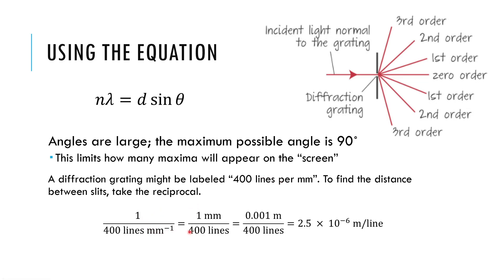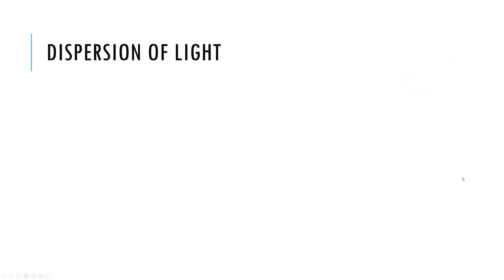And here's a kind of formal factor label way that you could do it with some dimensional analysis. One over 400 lines per millimeter. So I got this many millimeters in 400 lines, convert, convert, convert. And you should find that there's this spacing between each line. In other words, that's the spacing between the slits. So we would call that little D. Alright. There's just an example number, but that's a very common thing that you'll see in these problems.